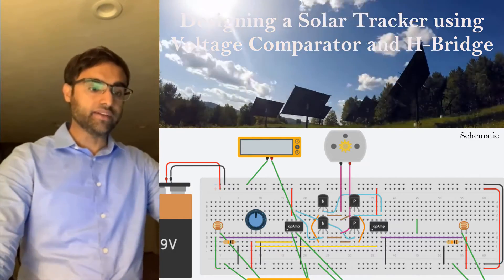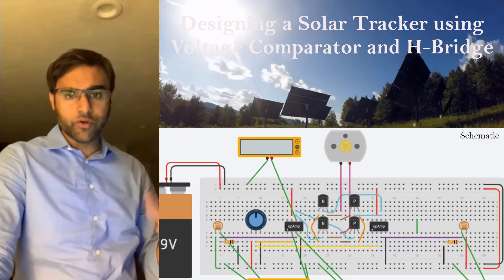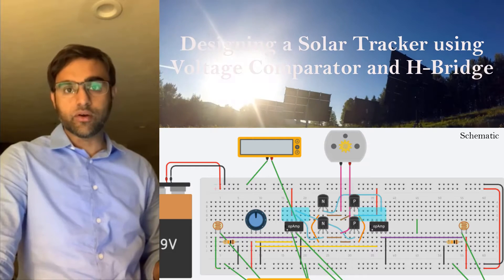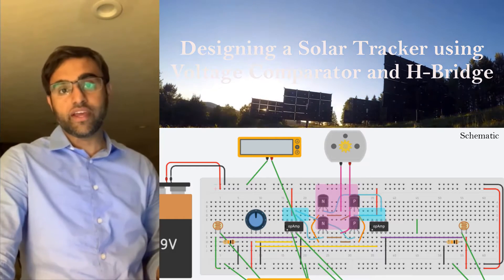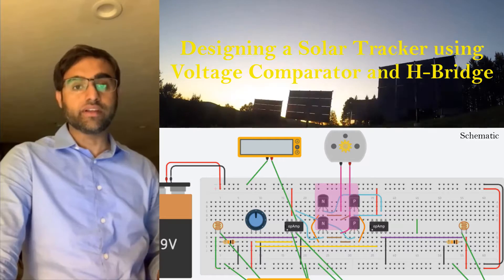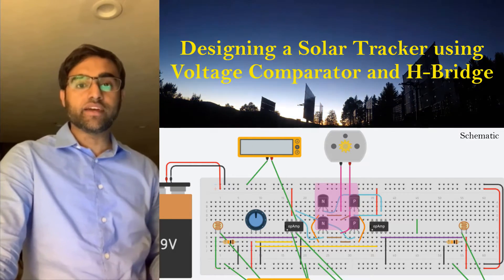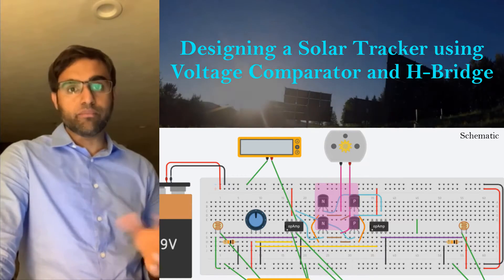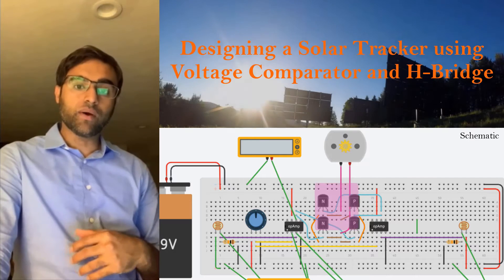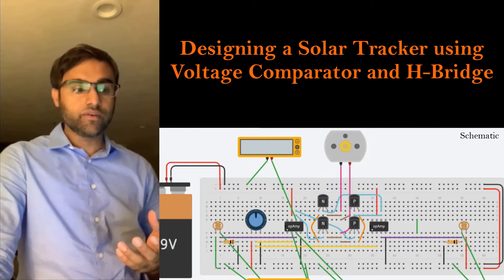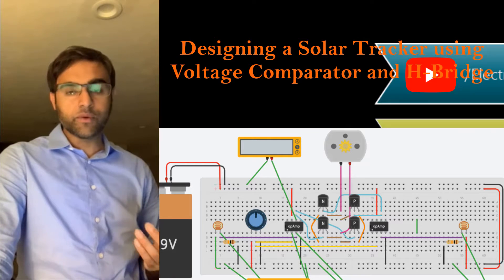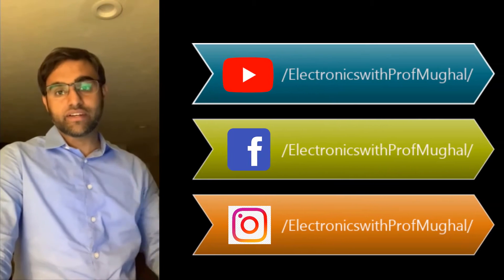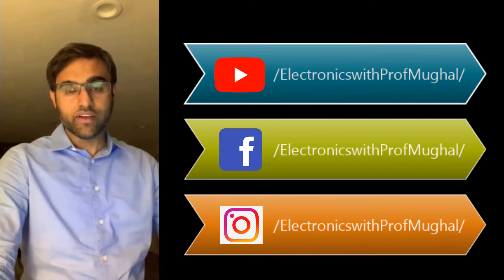So what we're going to do today is create a solar tracker using a voltage comparator — basically using an op-amp — and also an H-bridge. An H-bridge is an electronic circuit that allows for connecting a load and using voltage polarity to control the motor in both directions: clockwise and counterclockwise. The H-bridge uses two or four transistors, which will help change the orientation of the panel. We're going to use Tinkercad — this is all simulation-based, and I hope you enjoy it. Let's get started.